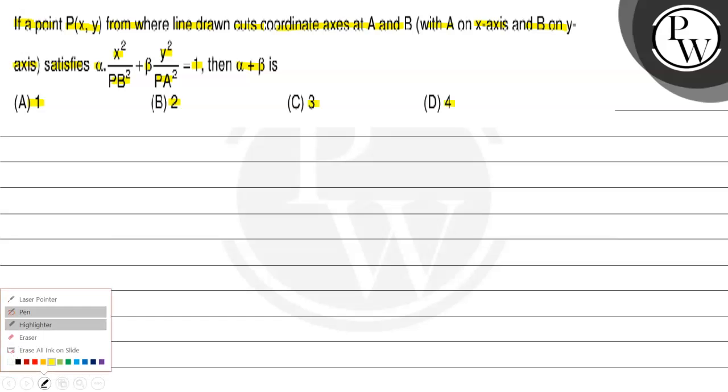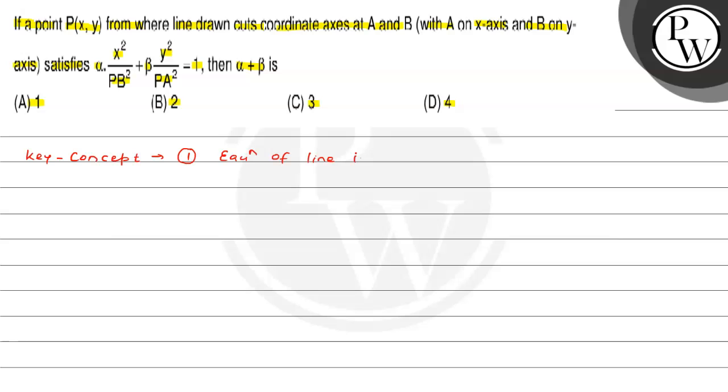The key concept here is first, equation of line in intercept form. Intercept means portion cut by a line on a given line. This portion is the intercept, the cut portion.